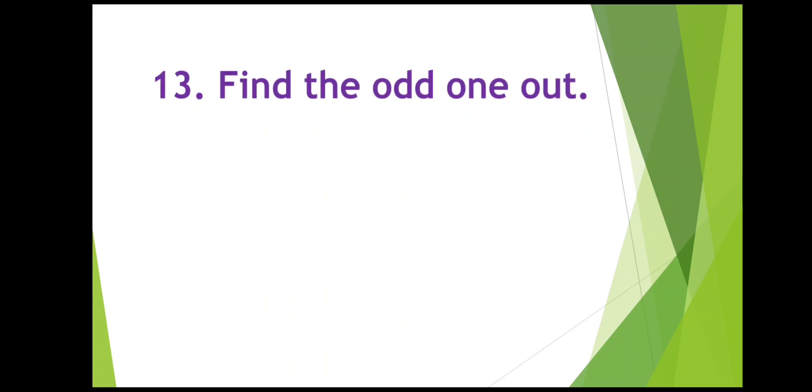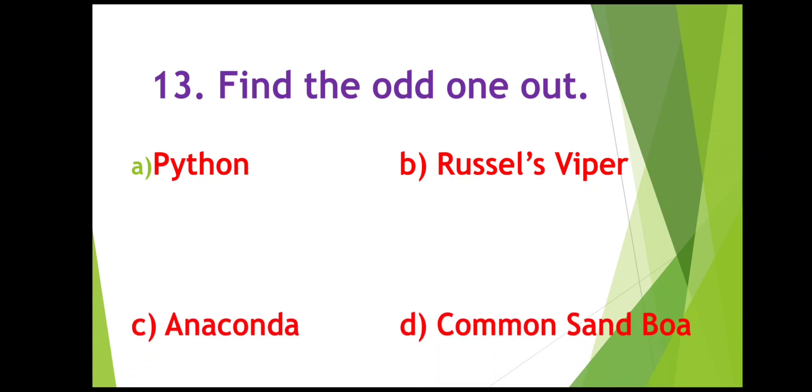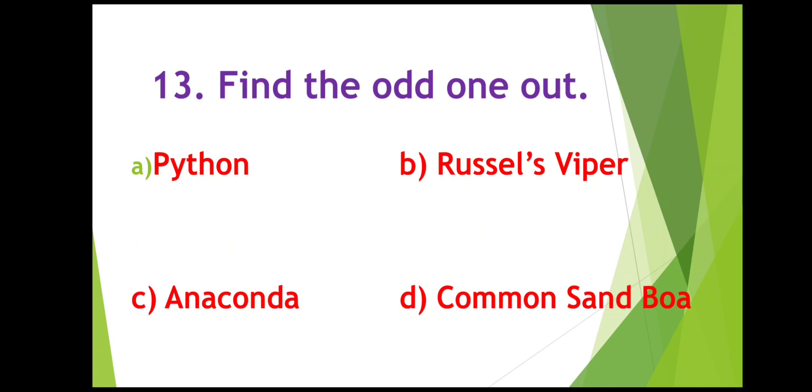Find the odd one out. You have to find the different one from the rest. First Python, Russell Viper, Anaconda, or Common Sand Boa. So can you identify the odd one here? Python is a non-poisonous snake. Russell Viper is a poisonous snake. Anaconda is also a non-poisonous snake, and Common Sand Boa is also a non-poisonous snake. So Python, Anaconda, and Common Sand Boa are non-poisonous snakes, and the right answer is Russell Viper, which is a poisonous snake.